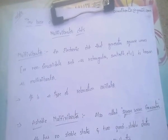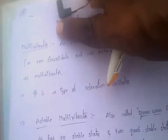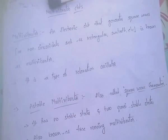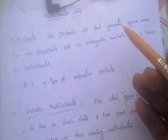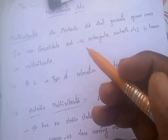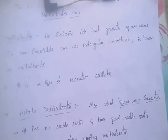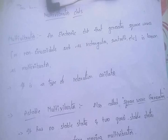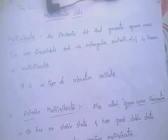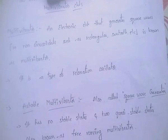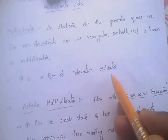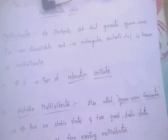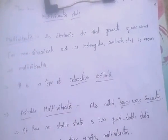Next is the multivibrator circuit. A multivibrator is an electronic circuit that generates square waves or non-sinusoidal waveforms such as rectangular and sawtooth signals. It is also a type of relaxation oscillator, which generates non-sinusoidal waveforms.